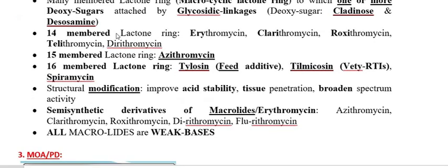On the basis of the lactone ring, macrolides have been divided into subgroups. Those possessing a 14-membered lactone ring include erythromycin, clarithromycin, roxithromycin, and telithromycin — four important macrolide antibiotics belonging to the 14-membered lactone ring.